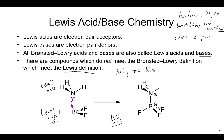We'll end our lecture series on acids and bases where we started — defining what is an acid and what is a base with Arrhenius and Bronsted-Lowry — but now we have Lewis as well. In this lecture we talked about binary acids, oxyacids, carboxylic acids, and Lewis acids. This really completes our lecture series on acids and bases. That'll do it for this video — see you next time!